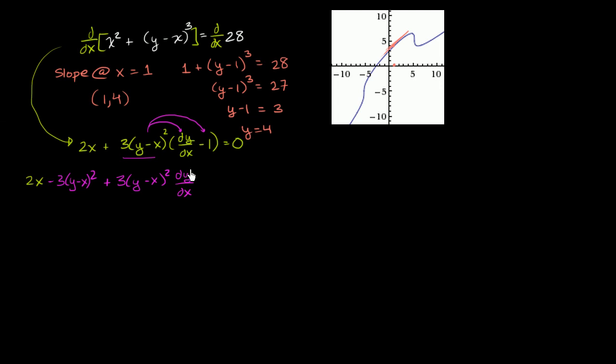And then, of course, all of that is going to be equal to 0. Now all we have to do is take this and put it on the right-hand side. So we'll subtract it from both sides of this equation. So on the left-hand side, we're just left with 3 times (y - x) squared times dy/dx.